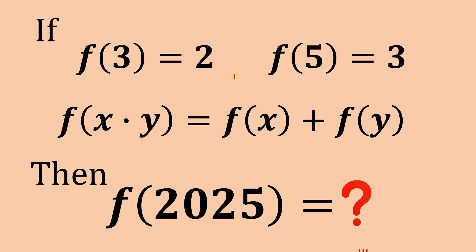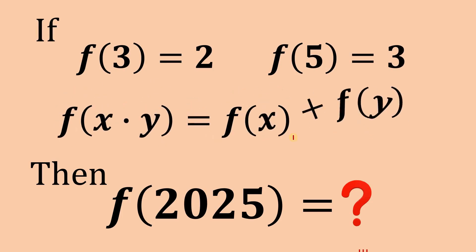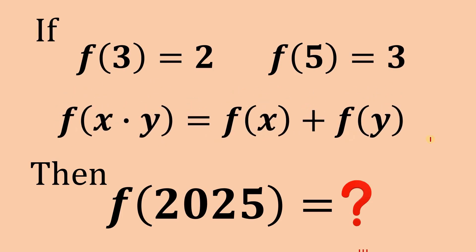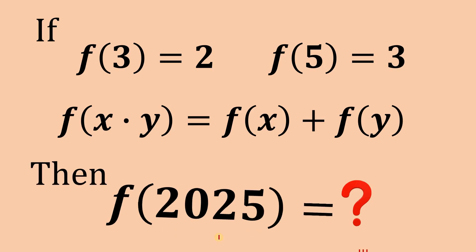If f(3) equals 2, f(5) equals 3, and it satisfies the function f(x times y) equals f(x) plus f(y), then what is the numerical value of f(2025)?